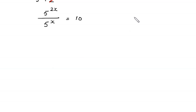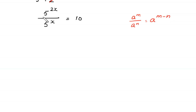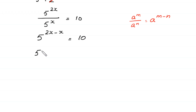According to the property of exponents, a to the power m over a to the power n is equal to a to the power m minus n. So 5 to the power 2x over 5 to the power x becomes 5 to the power 2x minus x, equal to 10. Therefore 5 to the power x equals 10.